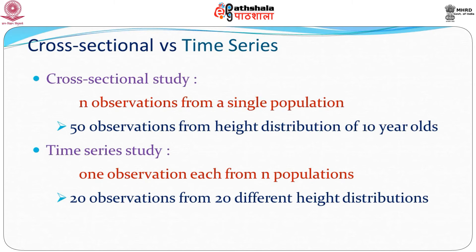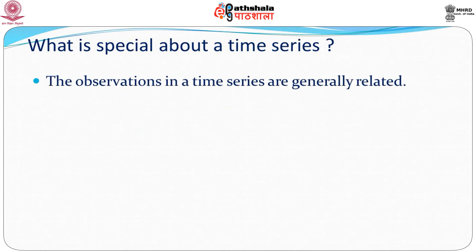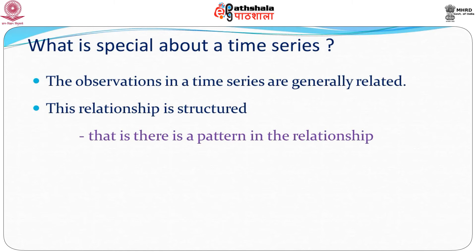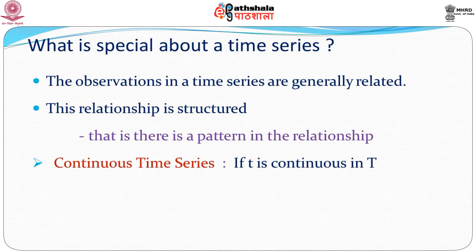You can see that the two types of data are fundamentally different. What is special about a time series is that the observations are generally related. In a cross-sectional study, different girls of the same age would have independent heights. But if you look at a single girl, her height this year will relate to her height in the previous year — so the observations are sequentially related. This sequential relationship has a particular structure, a pattern, and this pattern is what we study in time series analysis.